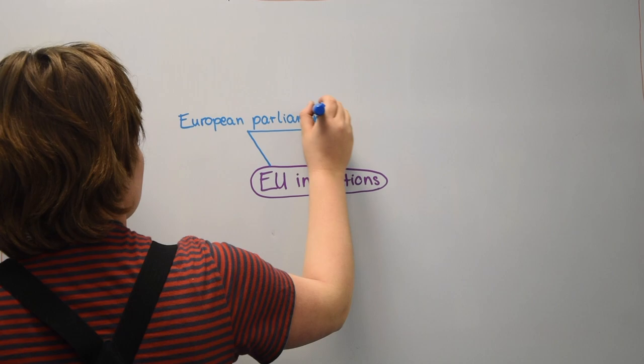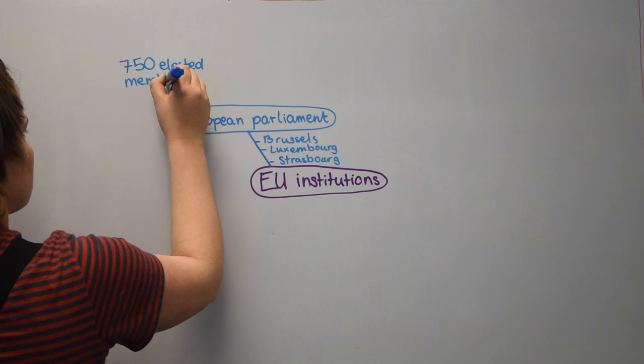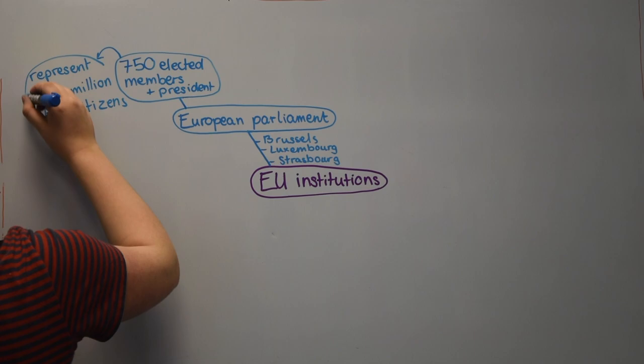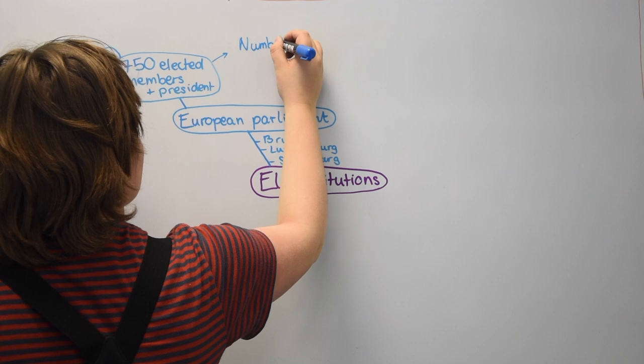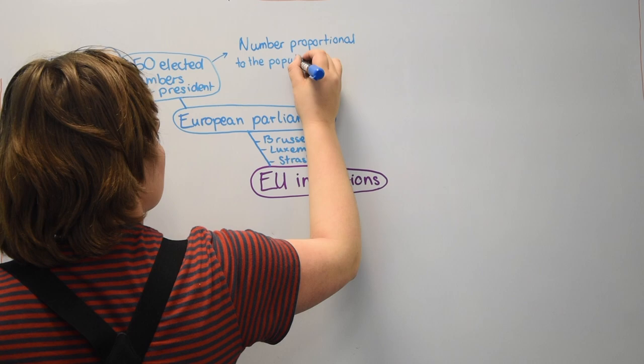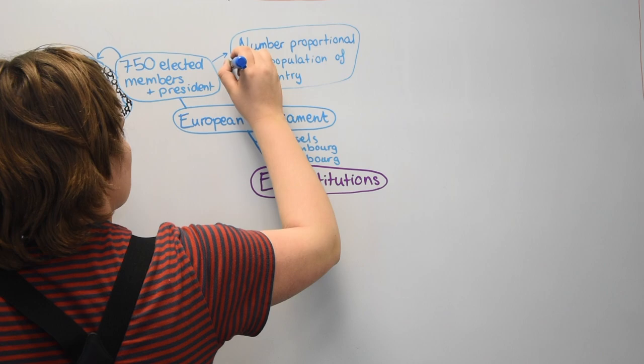Firstly we have the European Parliament. It brings together 750 elected members plus the president. The members represent 508 million EU citizens. The number of members per country is proportional to its population. For example, Luxembourg is a small country and therefore has only six members in the parliament.